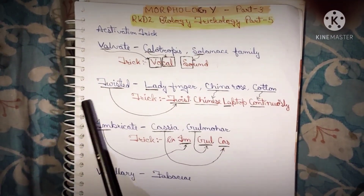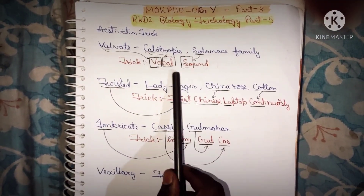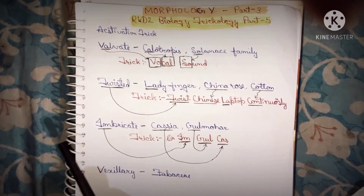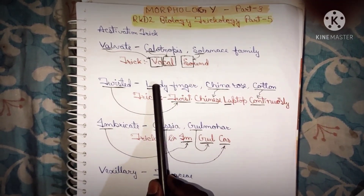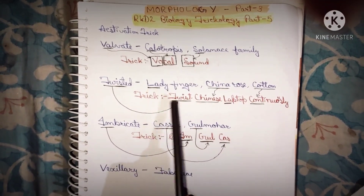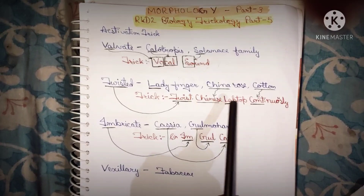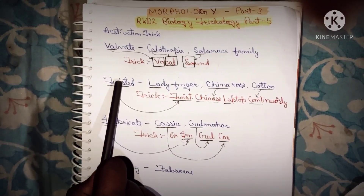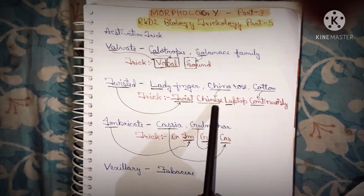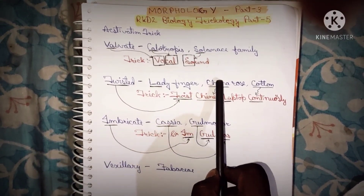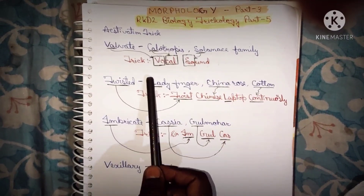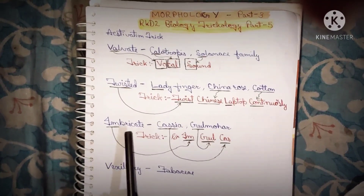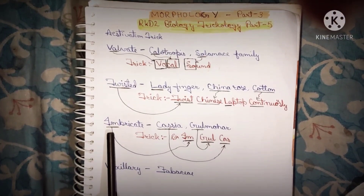Twisted estivation examples are Lady Finger, China Rose, and Cotton. The trick is 'Twist Chinese Laptop Continuous' — Twist indicates Twisted, Chinese indicates China Rose, Laptop indicates Lady Finger, and Cotton indicates Continuous and Imbricate.